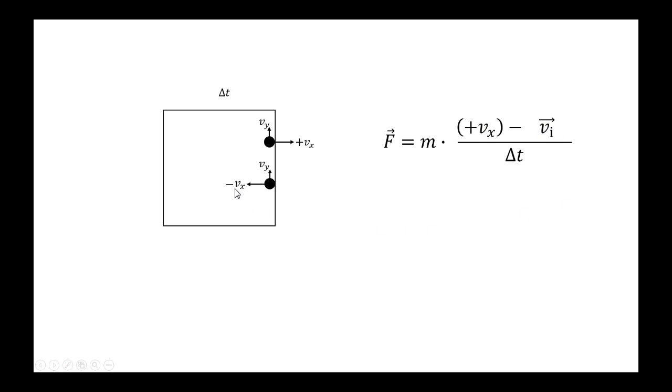The initial x velocity was negative vx. So I've got positive vx, I'm subtracting a negative, so that's just like adding. I've got 2 vx in the numerator.